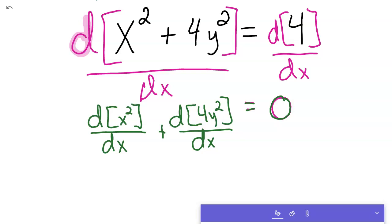So this one, just simplifying quick, would be the power rule would be 2x to the first power.